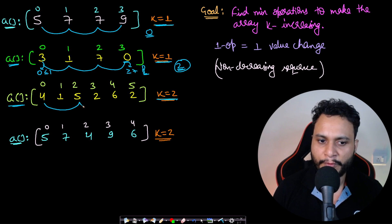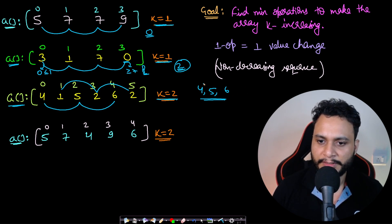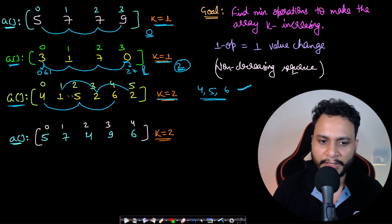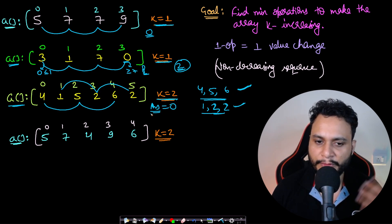In the third example, k equals 2, so the jump size is 2. The first list is [4, 5, 6] and the second list is [1, 2, 2]. For list 1: 5 ≥ 4 and 6 ≥ 5 — already non-decreasing. For list 2: 2 ≥ 1 and 2 ≥ 2 — also non-decreasing. So no changes are needed, and the answer is 0.